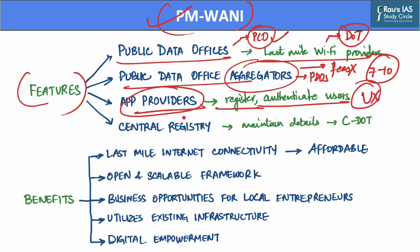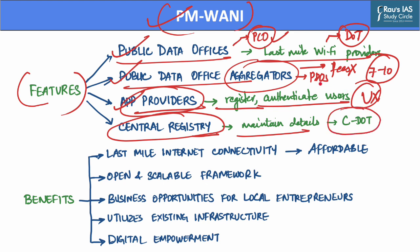The scheme also provides for a central registry, which will maintain details of app providers, public data office aggregators and public data offices. This registry will be maintained by the Centre for Development of Telematics (CDOT). The benefits of PM WANI include providing ubiquitous digital connectivity across the country. By creating a network of interoperable public data offices, the scheme aims to provide last-mile broadband distribution at affordable prices, making internet access available even in the remotest areas of the country.